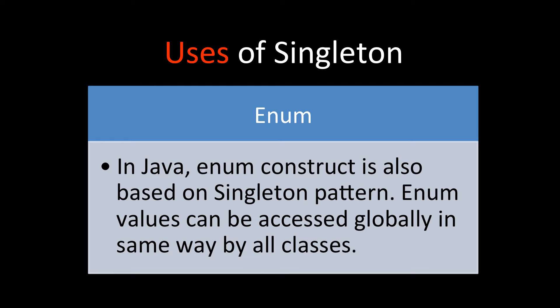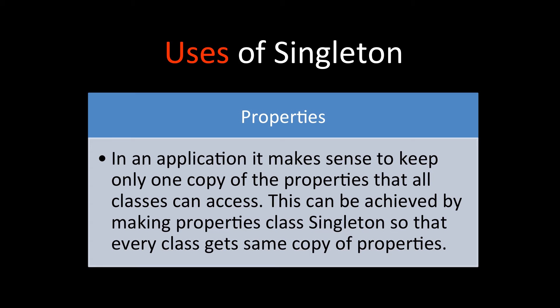So whenever you use Runtime, you are using a singleton. Then we have enum — all enum constructs in Java are also based on the singleton pattern. Enum values can be accessed globally and in the same way by all classes, so whenever you create an enum you are actually creating a singleton pattern-based class.